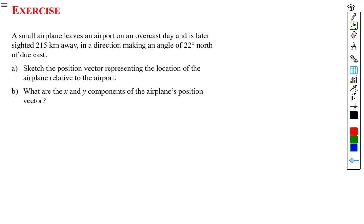A small airplane leaves an airport on an overcast day and is later sighted 215 kilometers away in a direction making an angle of 22 degrees north of due east. Sketch the position vector representing the location of the airplane relative to the airport, and what are the x and y components of the airplane's position vector?